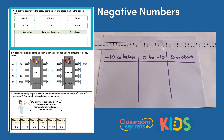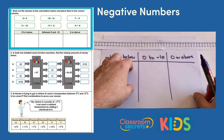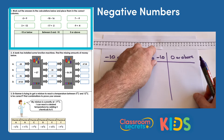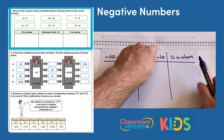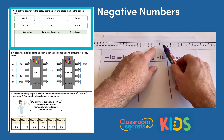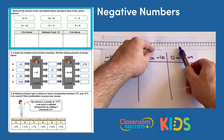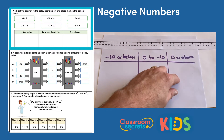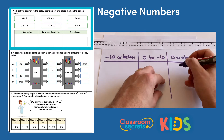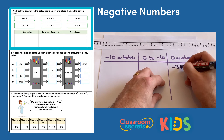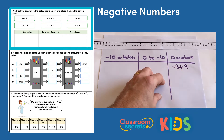The first calculation is negative 3 add 9. We're adding a positive value so that's an add. Starting at negative 3 and adding 9 steps along the number line brings us to 6. So negative 3 add 9 goes in the zero or above column.